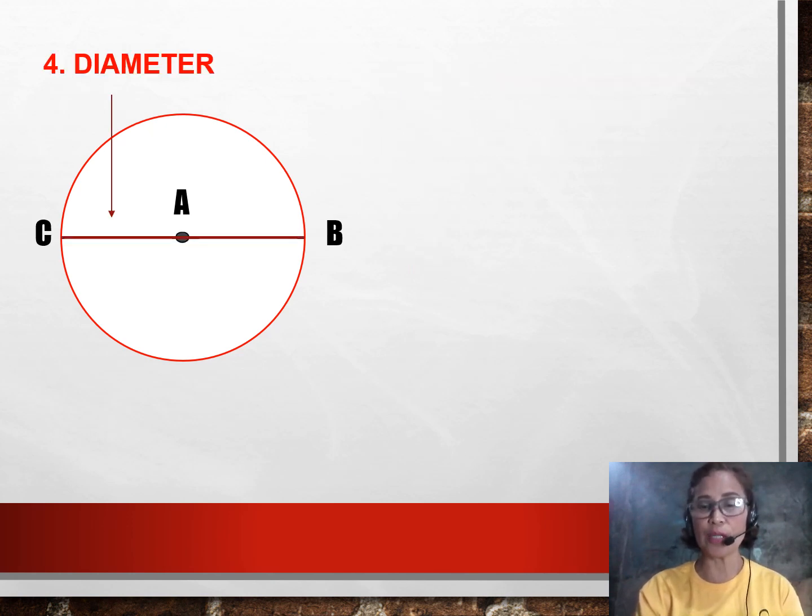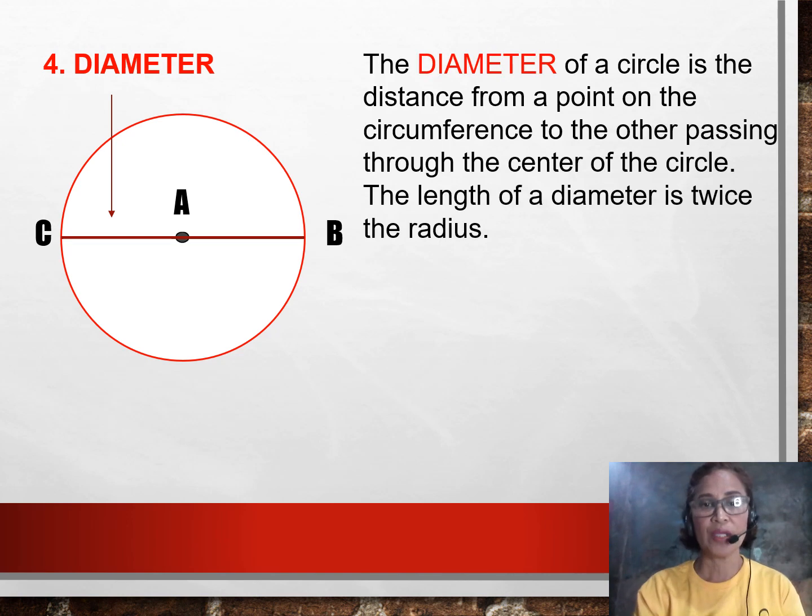Moving on to our fourth part, we call it the diameter. The diameter of a circle is the distance from a point on the circumference to the other point on the circumference again, but it has to pass through the center. For example, we have here a point C on the circumference and a point B on the circumference, but it has to pass through the center A. This time we can name now this diameter as Segment CB. We can also call it Segment BC and they mean the same.